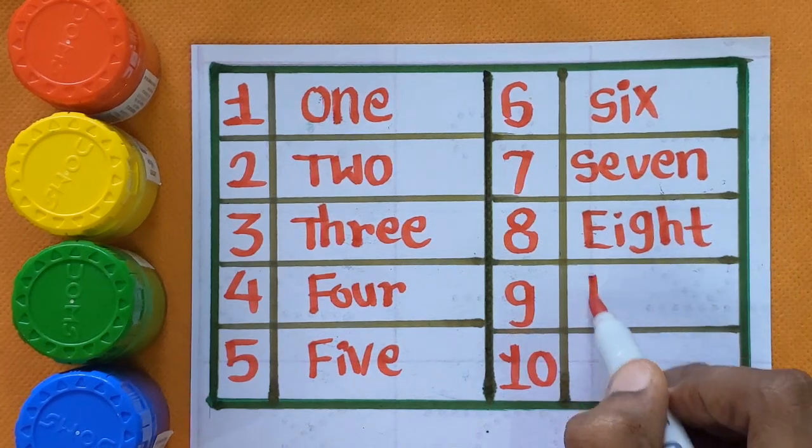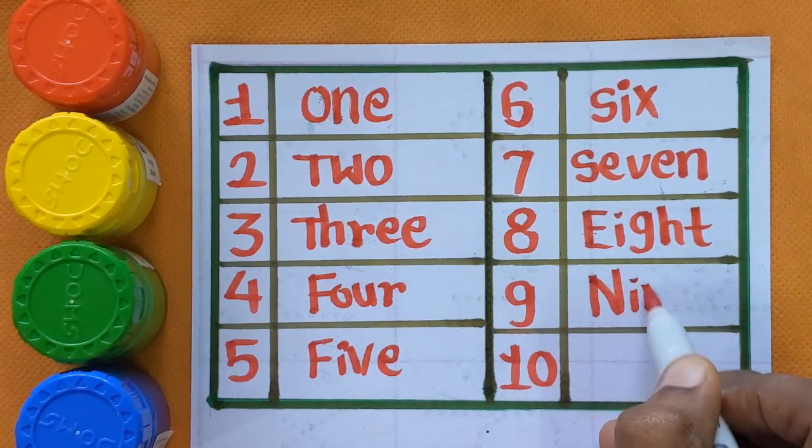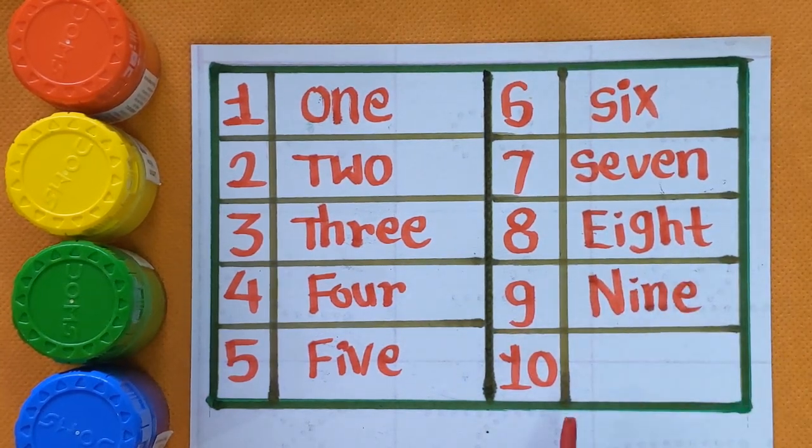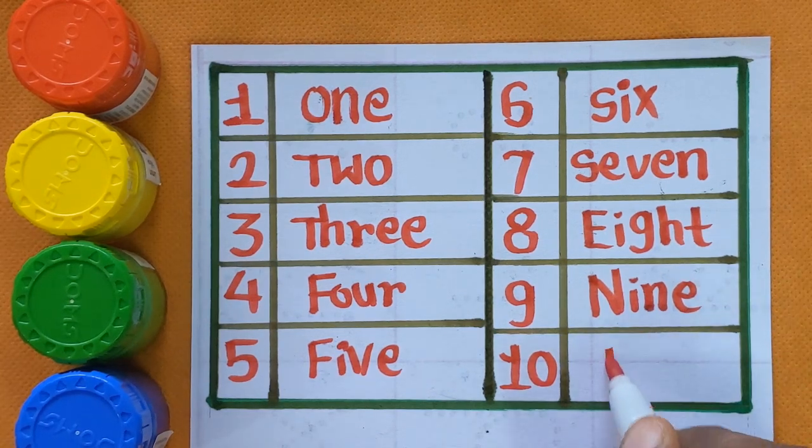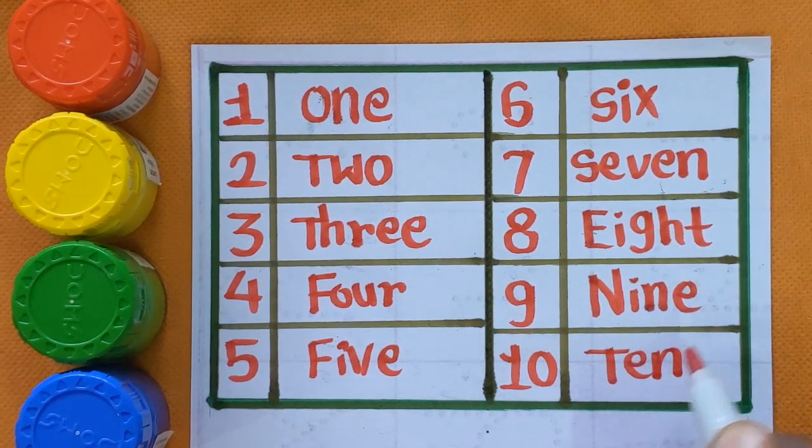Next is number 9, N-I-N-E, and one zero, ten, T-E-N, ten.